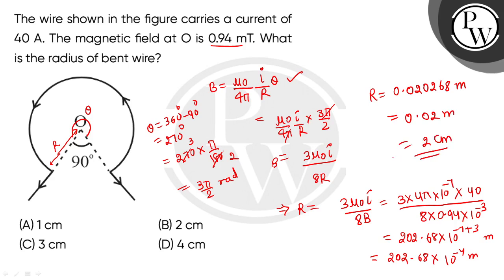The radius of the bent wire is 2 centimeters. Option B is the correct answer. I hope you all understand, thank you so much.